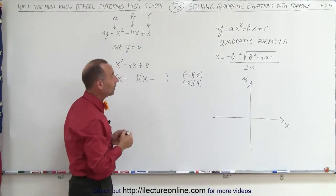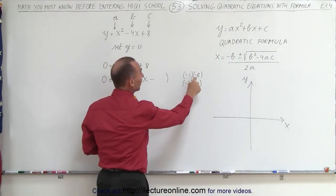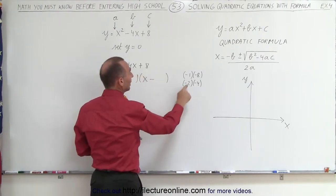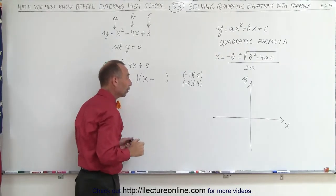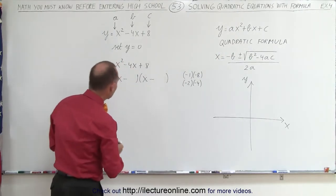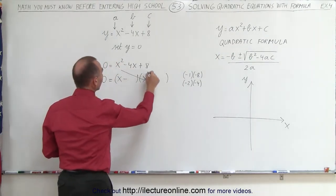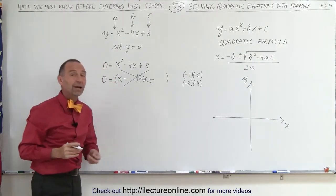But notice, when I add them together, negative 1 plus negative 8 is negative 9. That's not a negative 4. And negative 2 plus negative 4 gives me negative 6, which is also not negative 4. So it looks like I cannot factor this. This is not the correct method to do it. It's not possible.